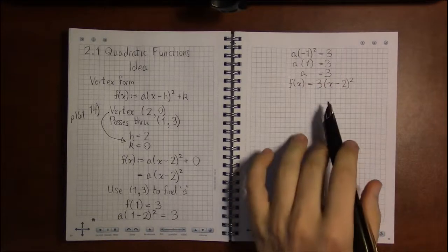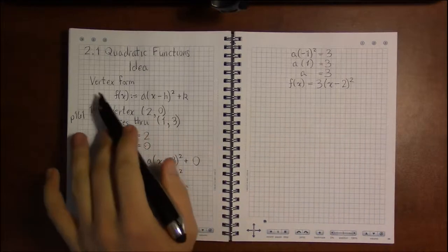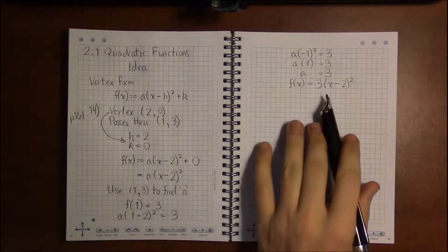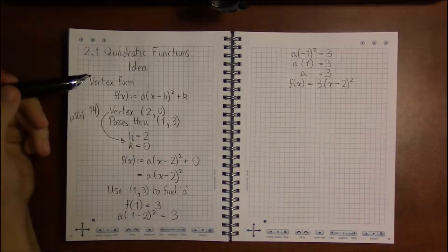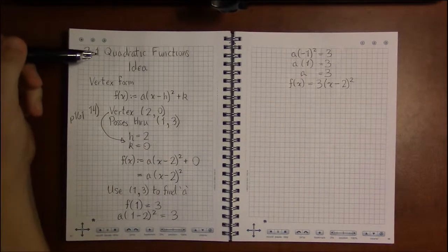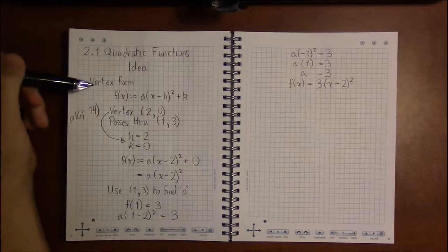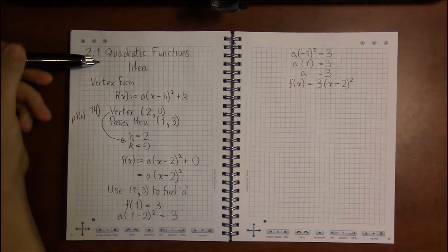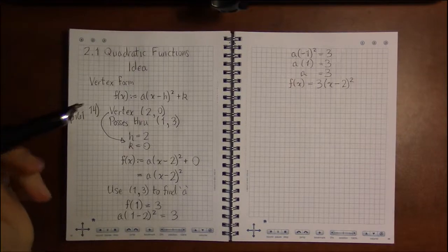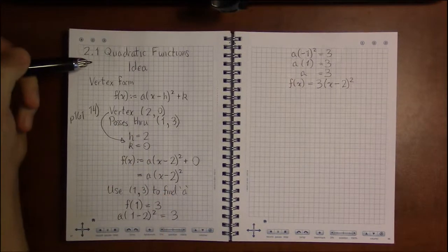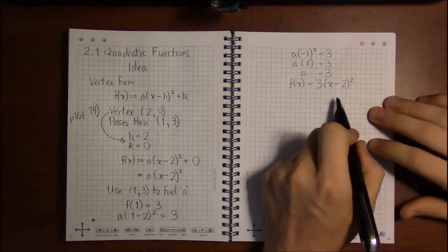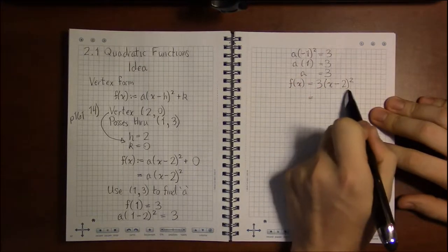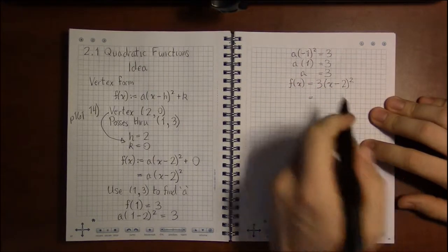Now we also introduced the standard form of a quadratic, and we'll get into going from vertex form to standard form in the next video. But for now, the easy way is to go from vertex form into standard form, and the way you do that is you simply square this term here.